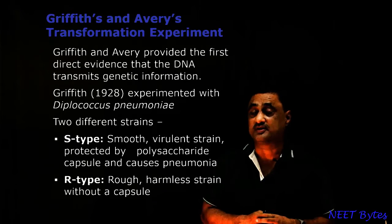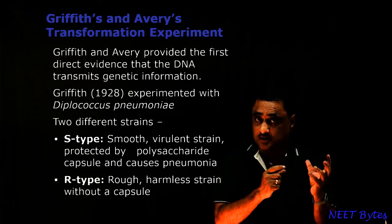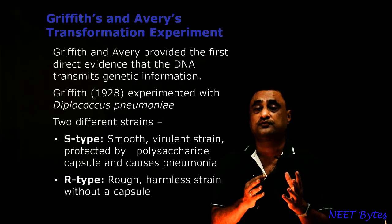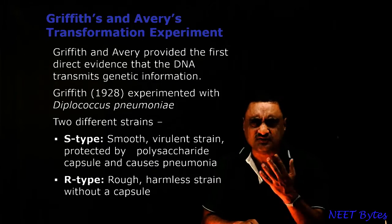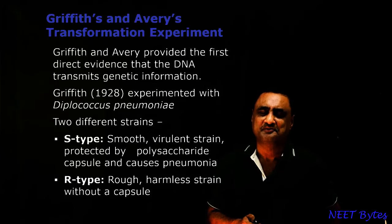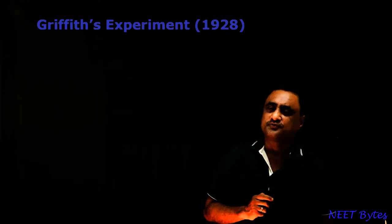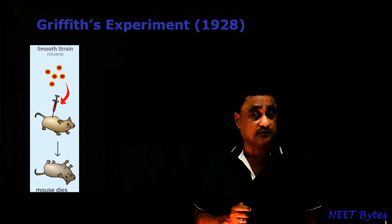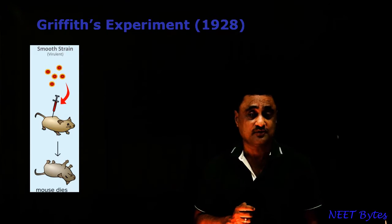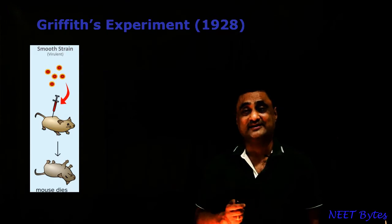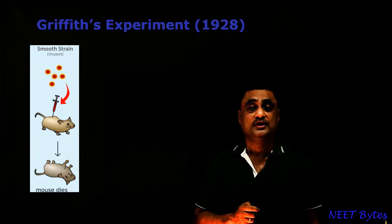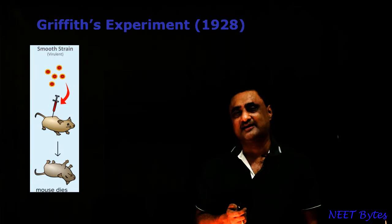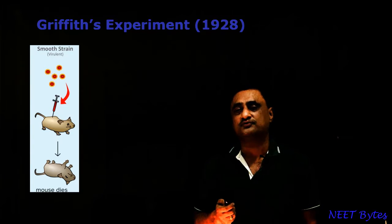He did his experiment with mice and the different strains of the bacteria. First, he took the smooth form of bacteria and injected it into mice. Once he injected it into mice, the mice died, and this death was due to pneumonia, because the smooth form is responsible for causing the disease.